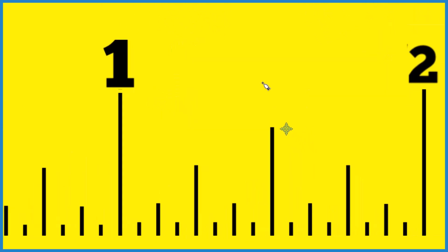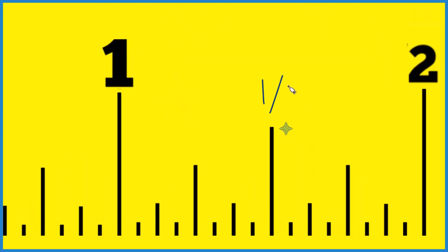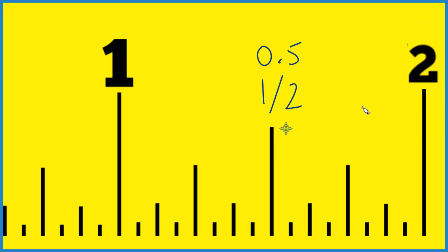So one half is right here, and one half is 0.5. So since two thirds is greater than 0.5, it has to be somewhere on this side, right here.